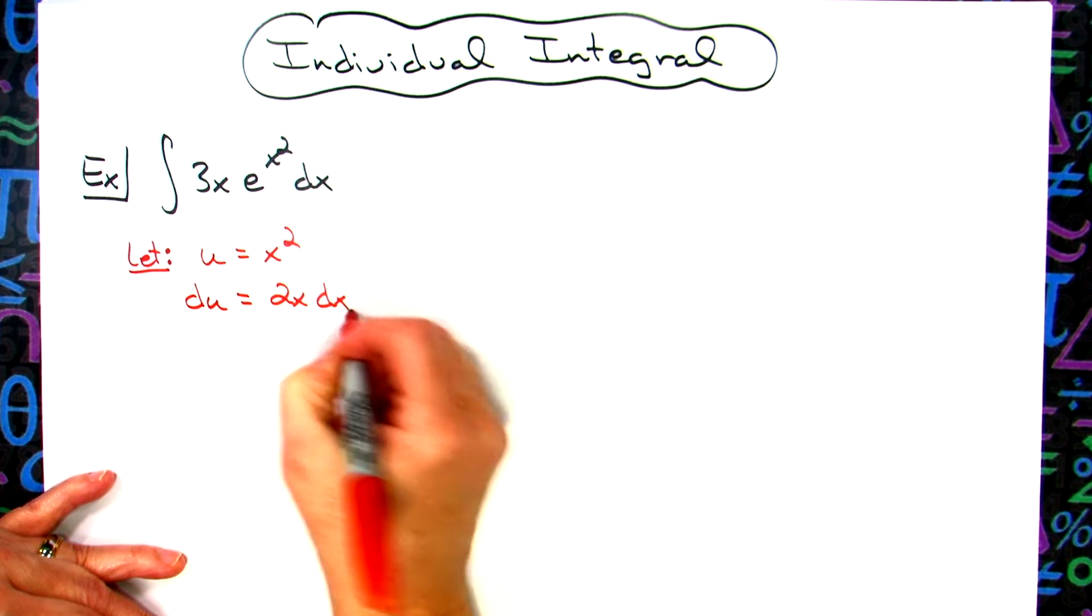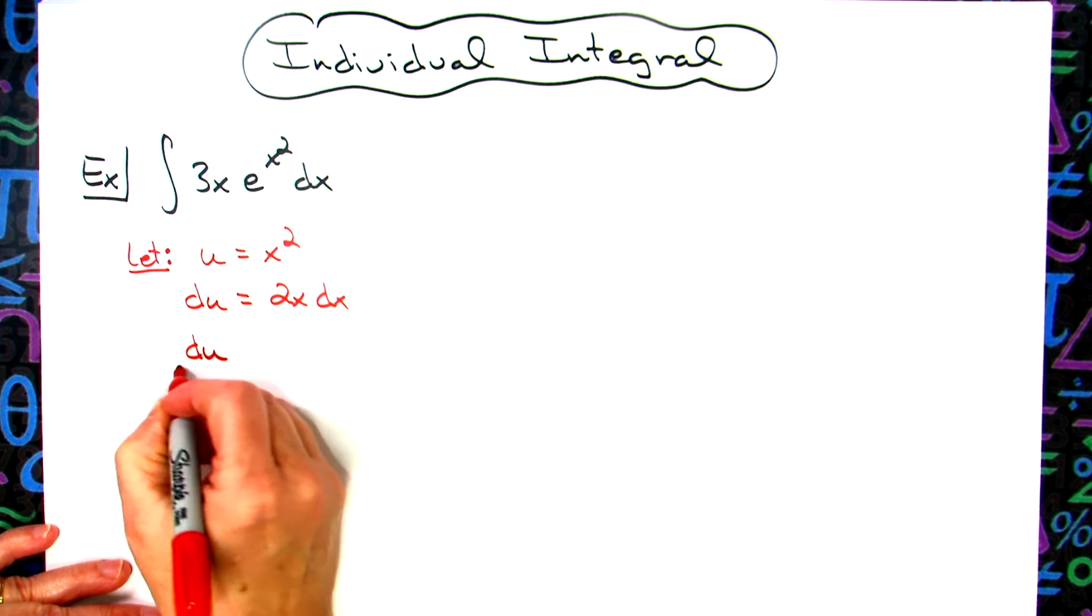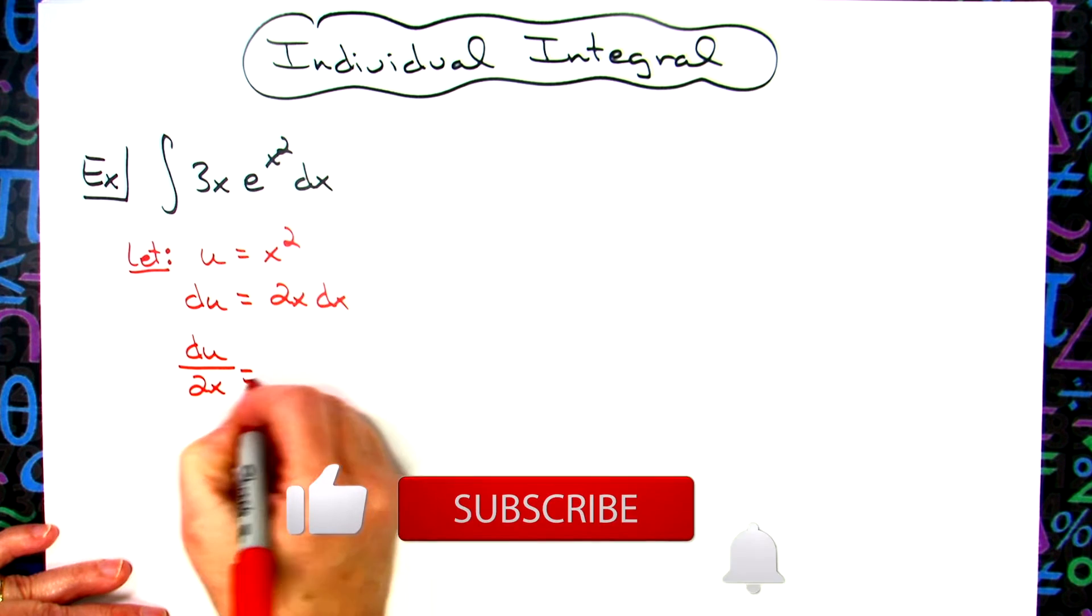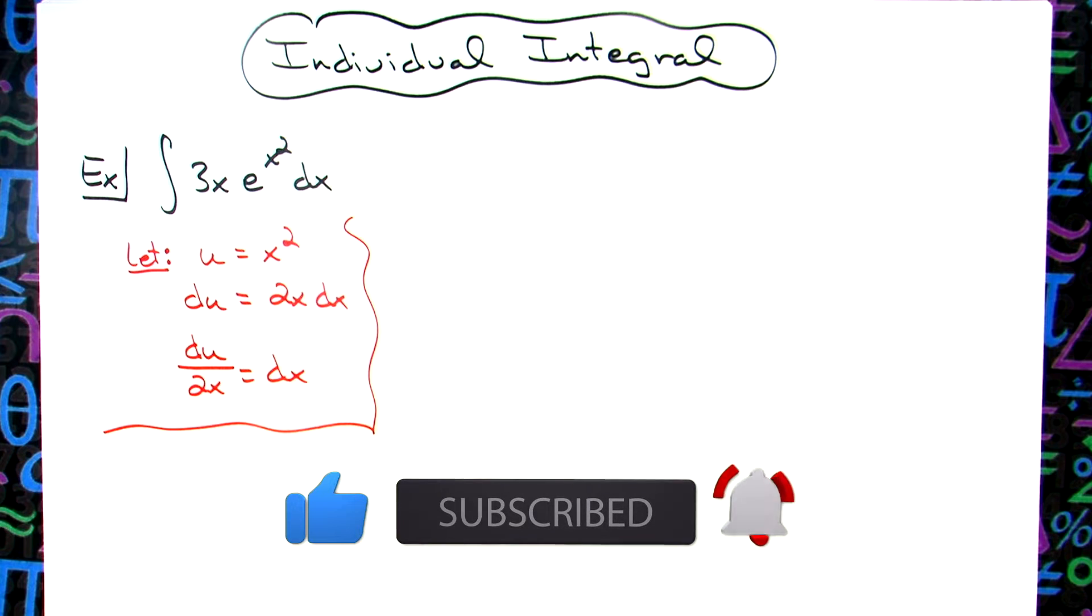I want to go ahead and solve all the way down for dx, so I'll have du over the 2x is equal to my dx. That's going to set me up to come back up to my original equation and start substituting.